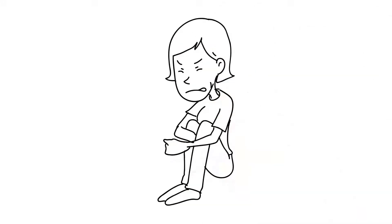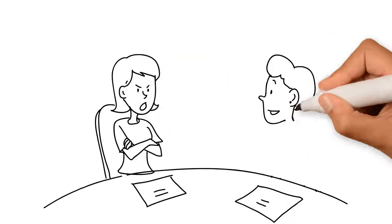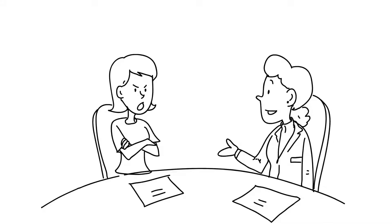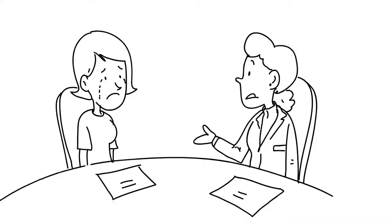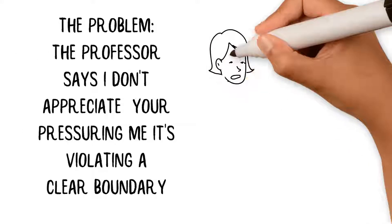So using the IPAR method, the introduction would be the student isn't happy. In fact, she's pressuring her professor and is even using emotional blackmail to get the professor to change the grade appropriately.